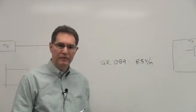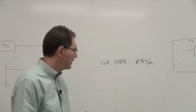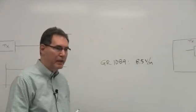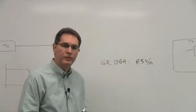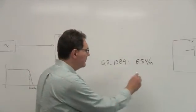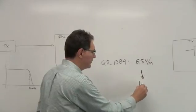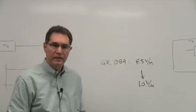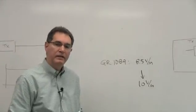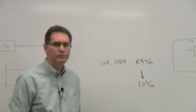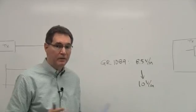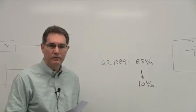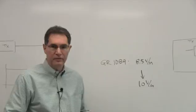Testing for EMI events is typically handled by a standard called GR1089 written by Telcordia. And it specifies 8.5 volt per meter fields, which are typically margined up by most test houses to 10 volts per meter. This is a very strong electromagnetic field. And if you can pass this particular test, you can pretty much be assured that in real-life situations, electromagnetic interference is not going to be a problem for your 10G base-T transceivers.